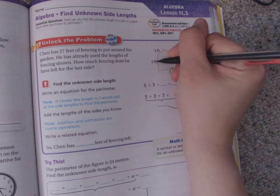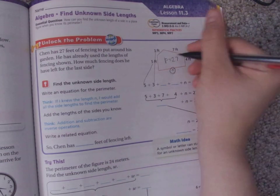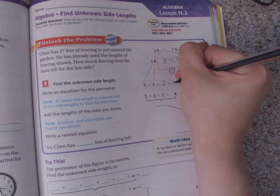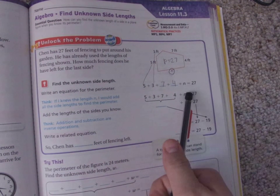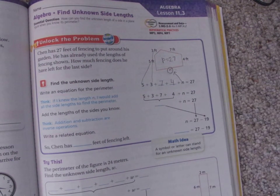So I have 5 plus 3, which he got from right here. 5 plus 3, and then we have 7 plus 4, plus n. And n is that number we're trying to find up here.